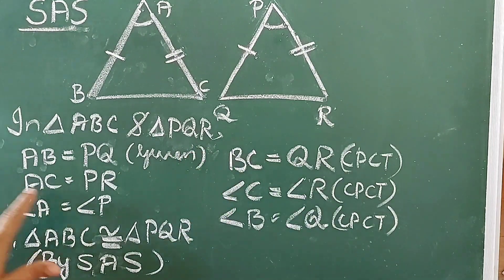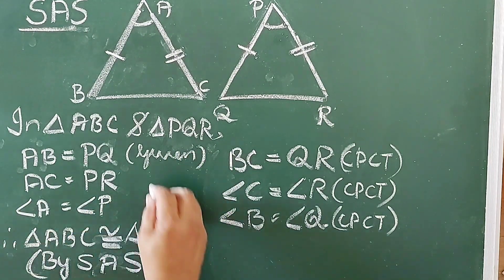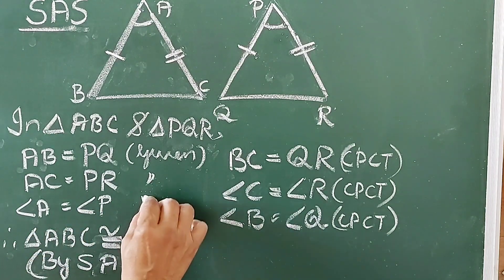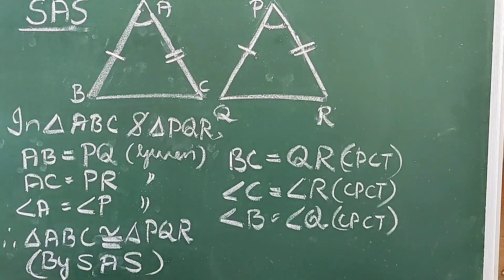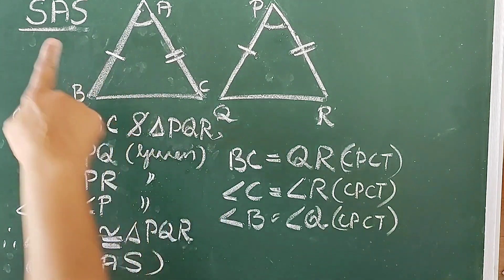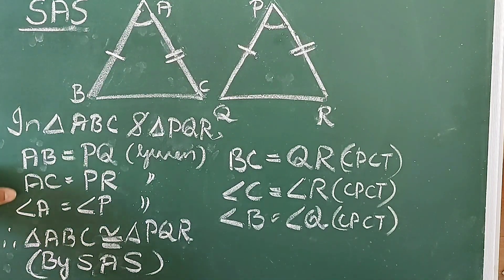AC equal to PR — also given. Angle A equal to angle P — given. So from these three statements, we can write triangle ABC congruent to triangle PQR by SAS condition — that is Side, Angle, Side.